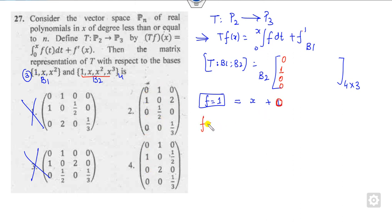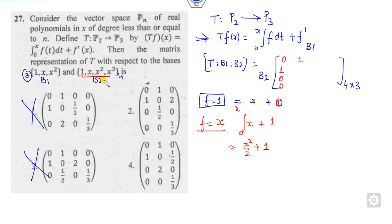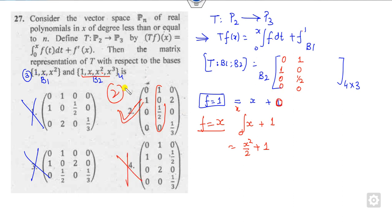For the second basis element f = x: T(x) = integral of x dt + derivative of x = x²/2 + 1. Writing in terms of B2: constant coefficient is 1, coefficient of x is 0, coefficient of x² is 1/2, coefficient of x³ is 0. So the column is [1, 0, 1/2, 0]. This does not match option 2, so the correct answer is option 2.